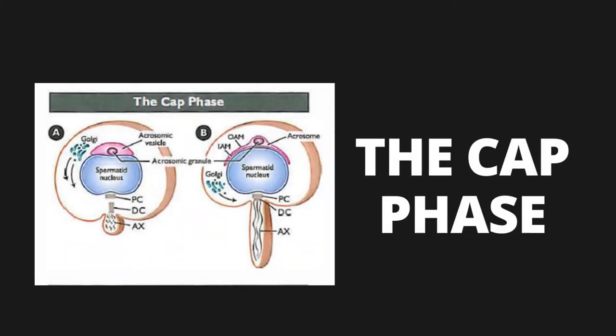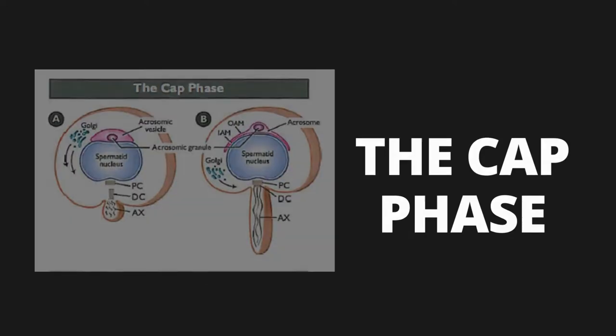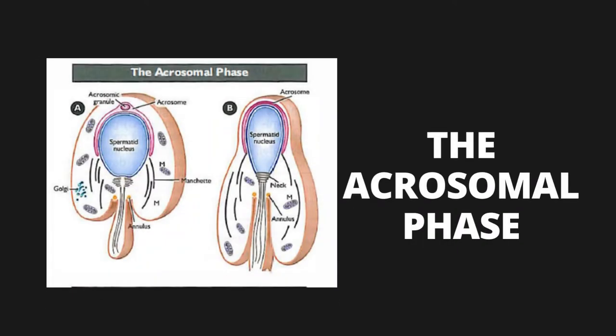The next figure shows the cap phase. In letter A, the Golgi migrates toward the caudal part of the cell, and the distal centriole forms the axoneme, or flagellum, that projects away from the nucleus toward the lumen of the seminiferous tubule. In letter B, the acrosomic vesicle flattens and begins to form a distinct cap consisting of an outer acrosomal membrane, an inner acrosomal membrane, and the acrosomal contents — the enzymes.